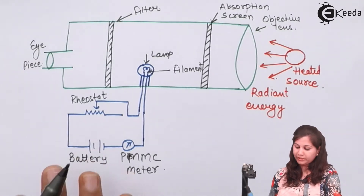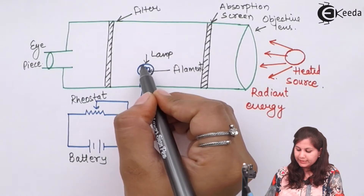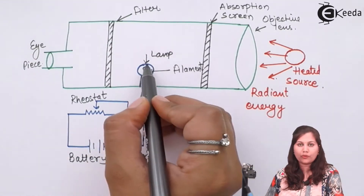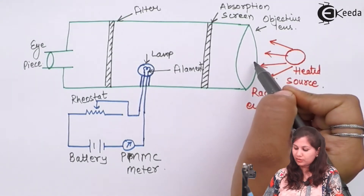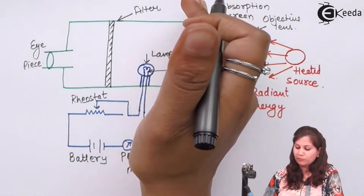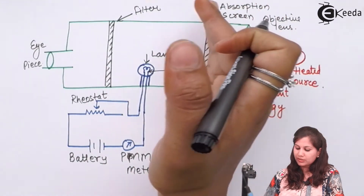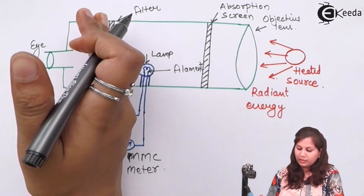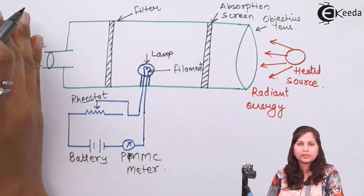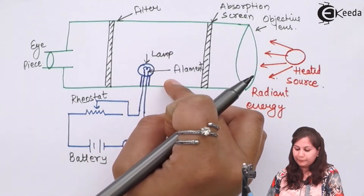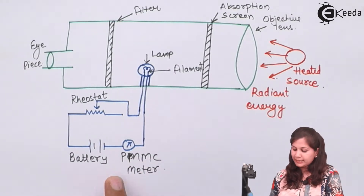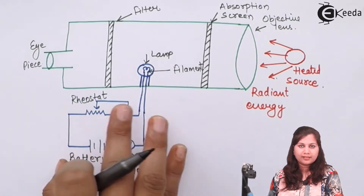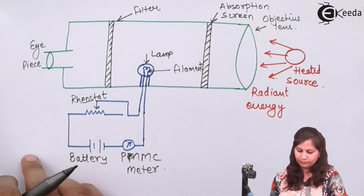This is the disappearing filament optical pyrometer. Here we have the filament inside a lamp, and we measure brightness by comparing it with this lamp. The heated source emits radiant energy. These radiations are absorbed by an absorption screen, then compared with the brightness of the filament. After passing through the filter, it reaches the eyepiece where the observer views the filament. The electric circuit connected to the filament consists of a rheostat, a PMMC meter, and a battery. The PMMC meter measures the current flowing in the circuit.